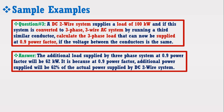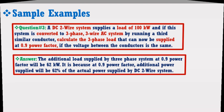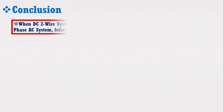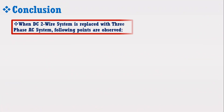Therefore, these smart tips help a lot in solving all these questions, especially in MCQ-type tests. At this stage, I want to conclude this lecture and highlight the main findings. In a nutshell, when a DC 2-wire system is replaced with a 3-phase AC system, the following main points are observed.